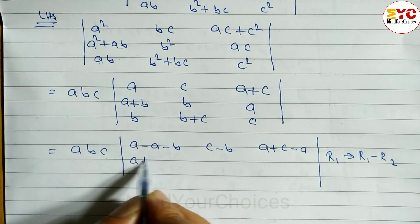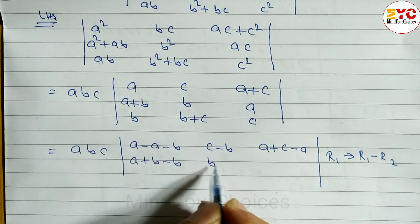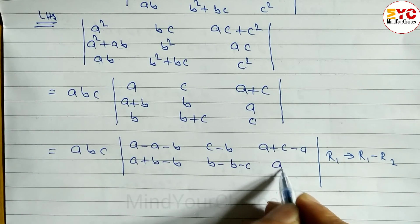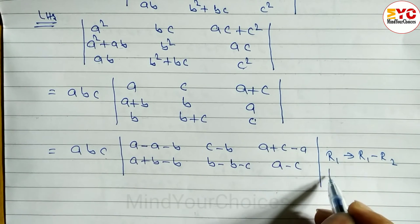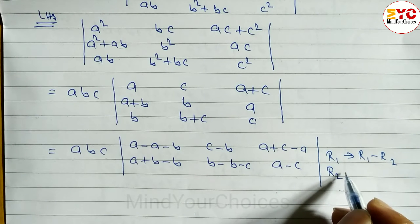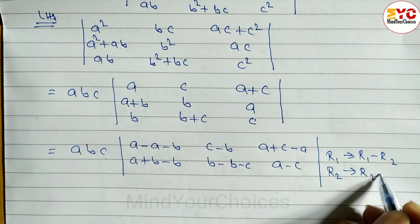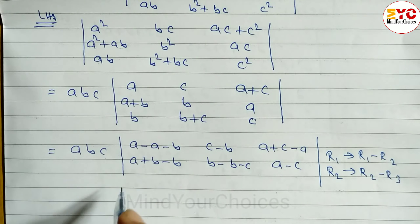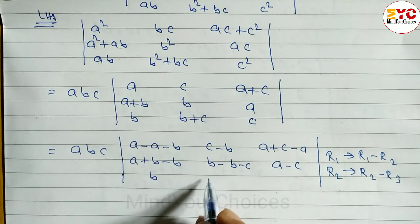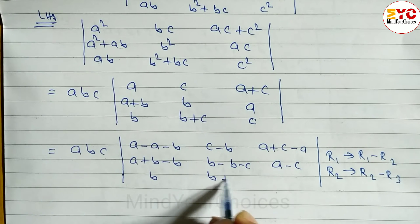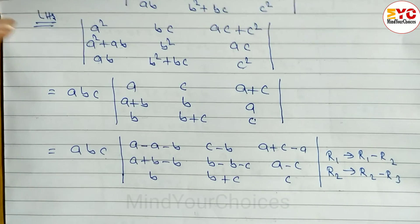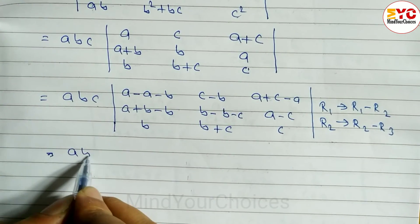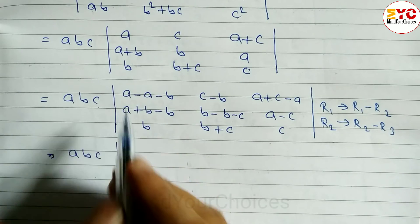Similarly we apply R2 → R2 − R3. Subtracting row 3 from row 2: a+b minus b gives a, b minus b gives 0, b+c minus c gives b, and a minus c remains. The third row stays the same: b, b+c, and c.